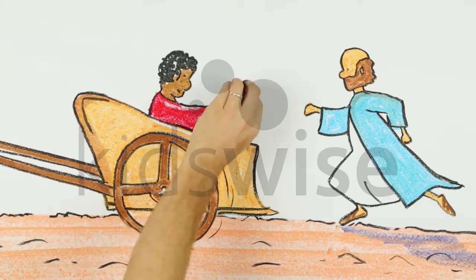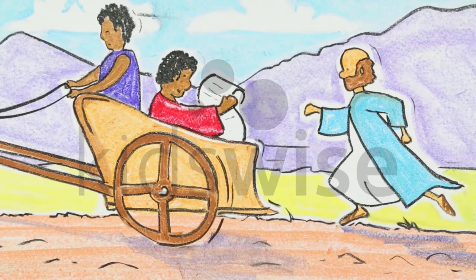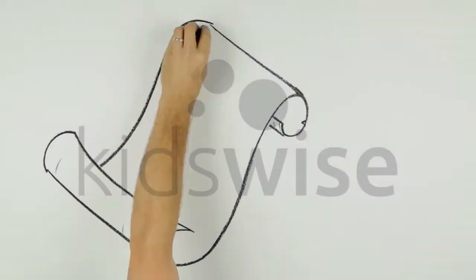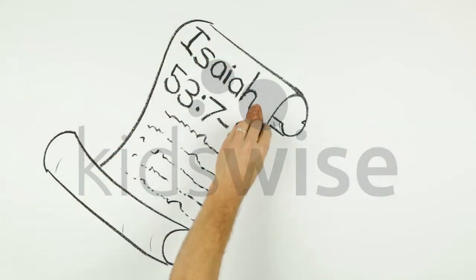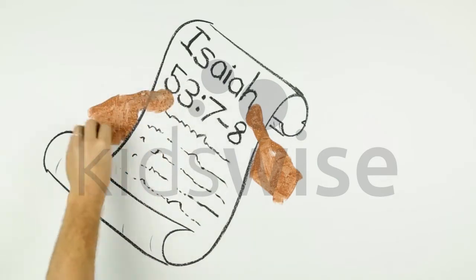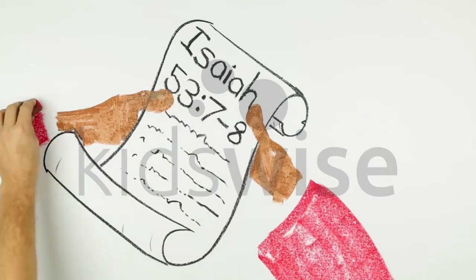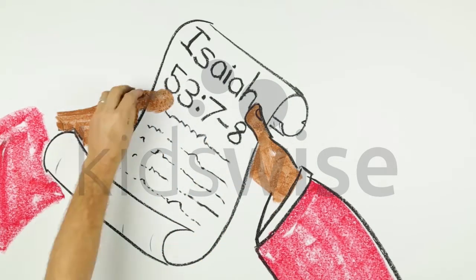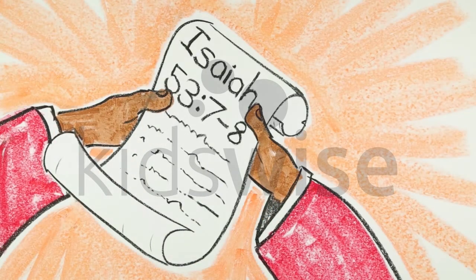The man was reading from a book of the Bible called Isaiah. He was led like a sheep about to be killed. He was silent. He never opened his mouth to protest. They treated him unfairly and then he died.